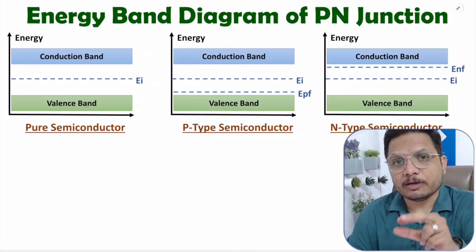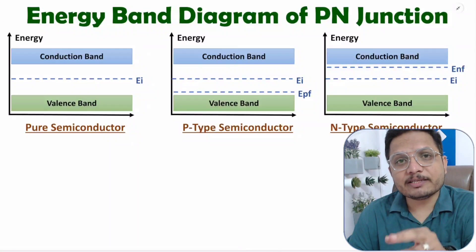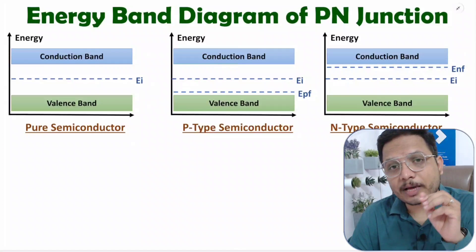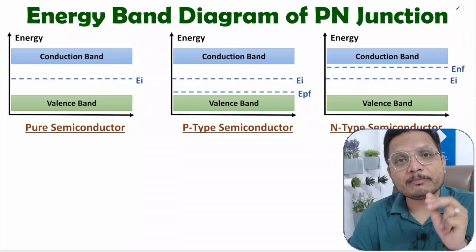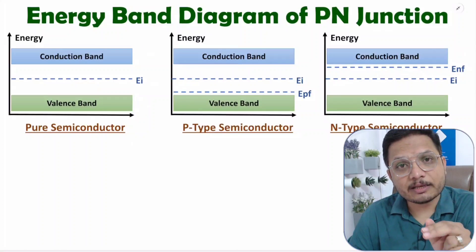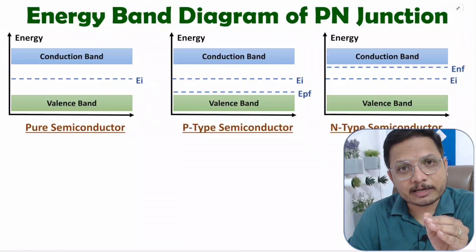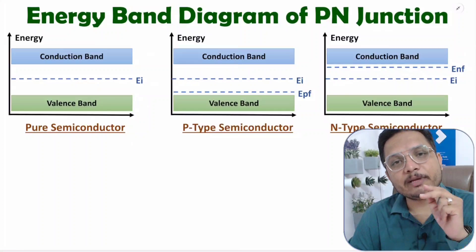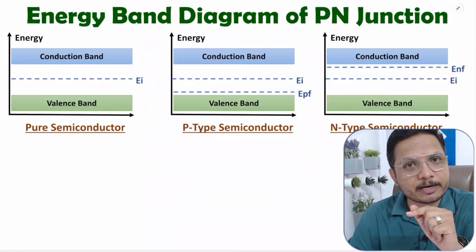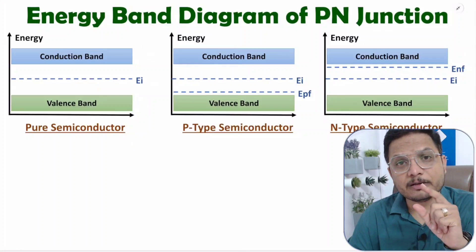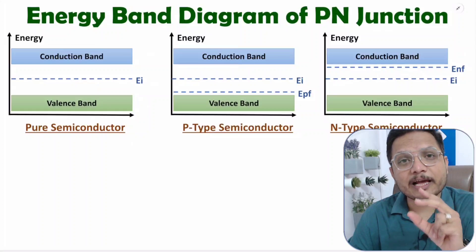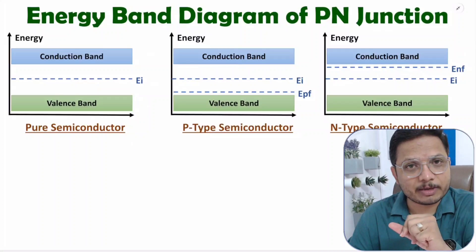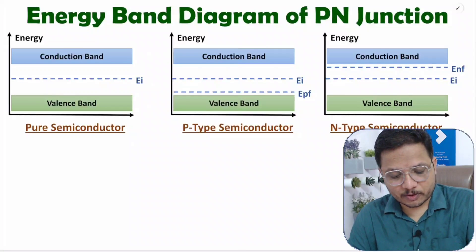To understand P-N junction energy band diagram, first you need to understand how energy band diagram is there with your semiconductor material, with N-type semiconductor material and with P-type semiconductor material. So first, I will explain you energy band diagram of your semiconductor material.